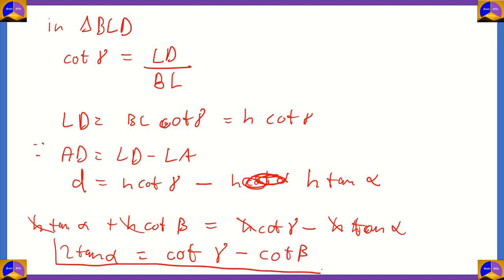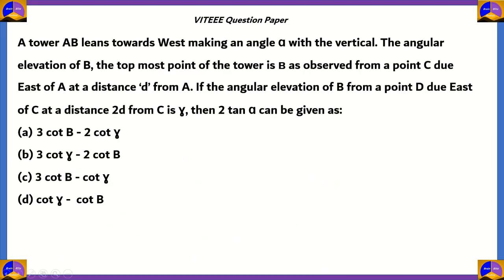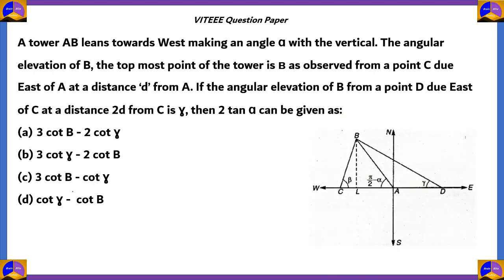So the correct relation is 2 tan alpha = cot gamma − cot beta. The correct option is option D: cot gamma − cot beta. Over here we are using trigonometric ratios in order to find out the correct value of 2 tan alpha.